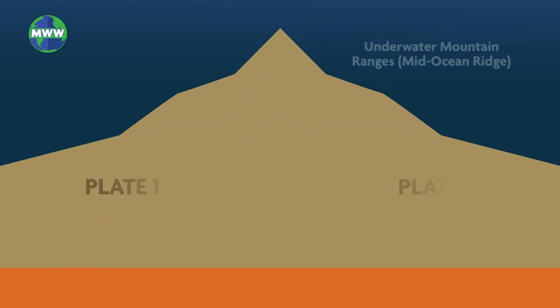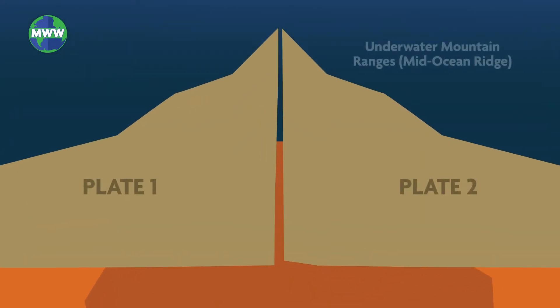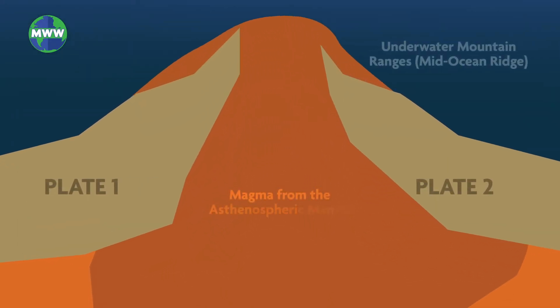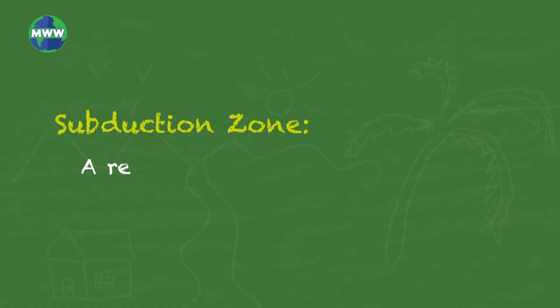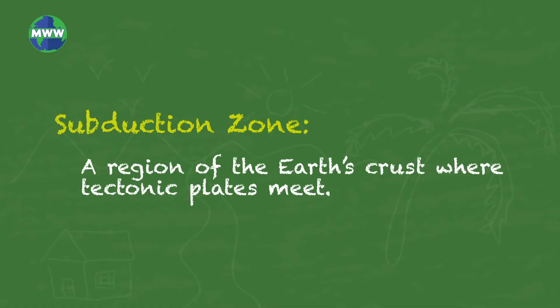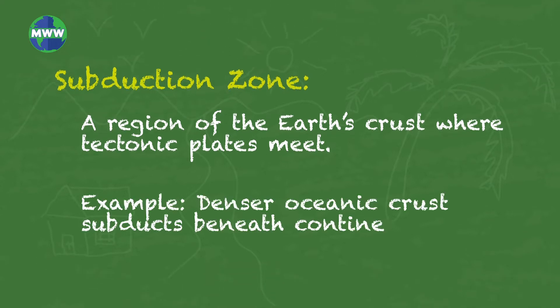Underwater mountain ranges where tectonic plates pull apart from each other cause oceanic crust to form. Oceanic crust is destroyed in subduction zones, where one tectonic plate slides under another. Denser oceanic crust subducts beneath continental crust.